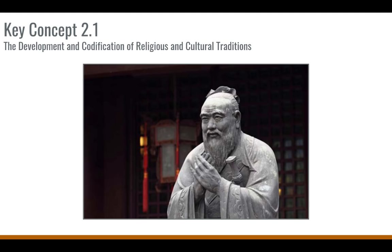In China, we see the development of Confucianism, which emerges from the writings and lessons of the Chinese thinker Confucius. Confucianism blended very well with Chinese culture, especially traditional religious practices of ancestor veneration. It taught filial piety and the relationships between fathers and sons, husbands and wives, elder siblings to younger siblings, and even the state to the people. It was really tied up in those proper relationships to create harmony in society.